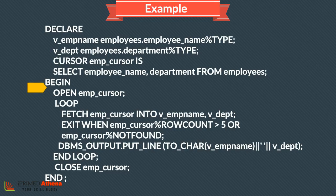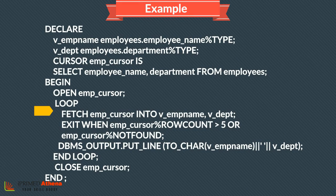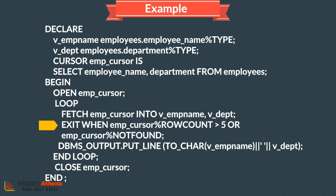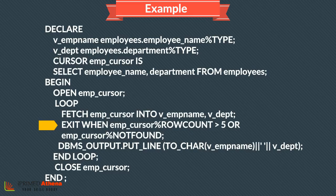The cursor is then opened in the execution section. Using a loop, we fetch the data of the cursor into the cursor variables. This is done for the first five records of the table, for which we use the cursor attributes row count and not found.